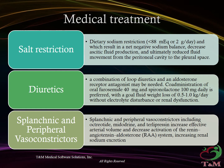Medical management – Salt restriction: Dietary sodium restriction to less than 88 mEq or 2 grams per day results in a net negative sodium balance, decreases ascitic fluid production, and ultimately reduces fluid movement from the peritoneal cavity to the pleural space. Diuretics: A combination of loop diuretics and an aldosterone receptor antagonist may be needed. Co-administration of oral furosemide 40 mg and spironolactone 100 mg daily is preferred, with a goal fluid weight loss of 0.5 to 1.0 kg per day without electrolyte disturbance or renal dysfunction.